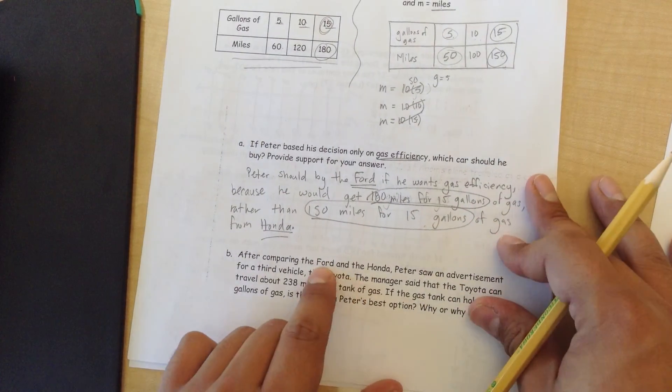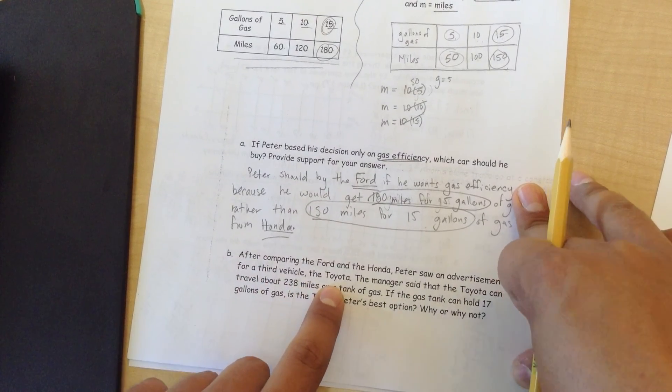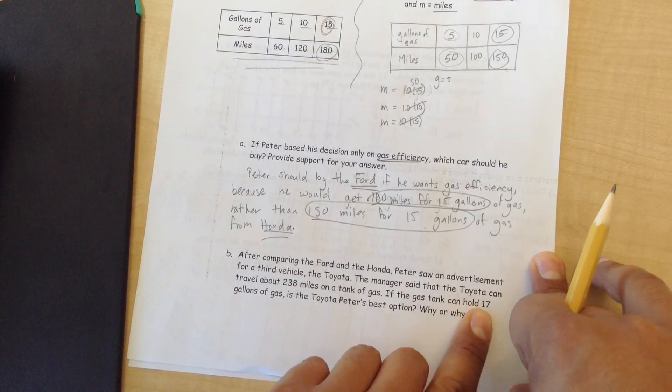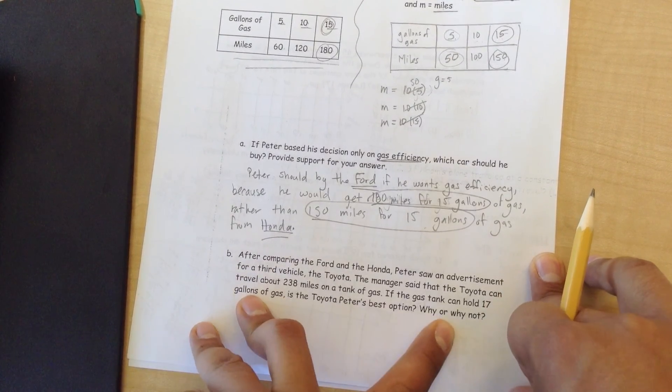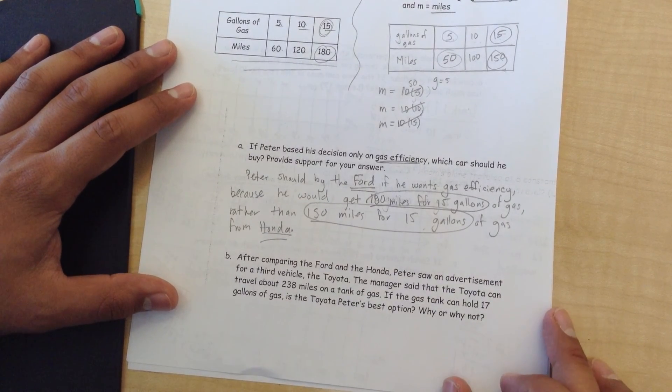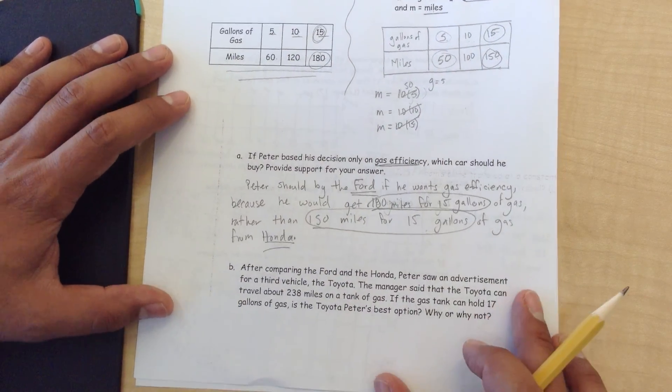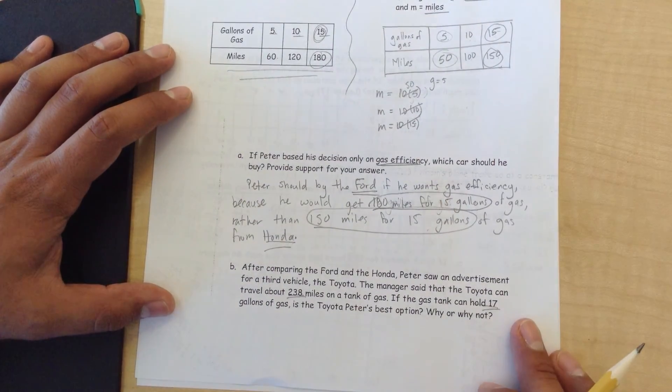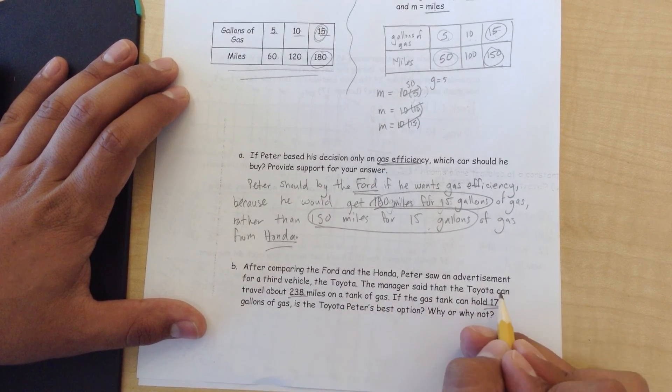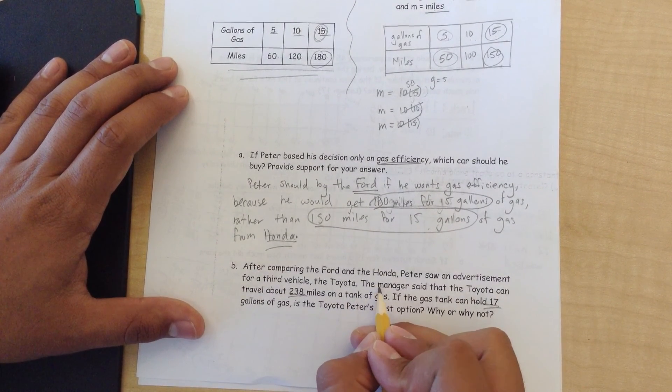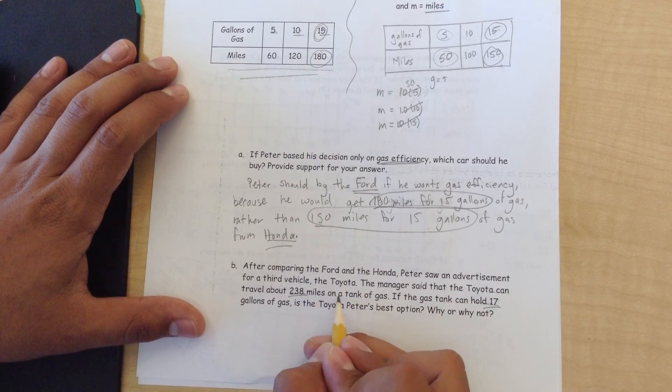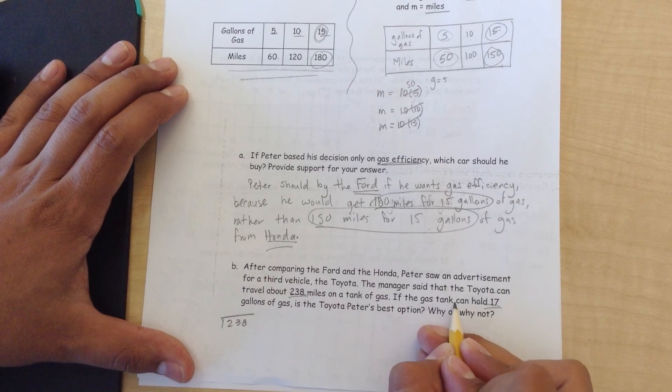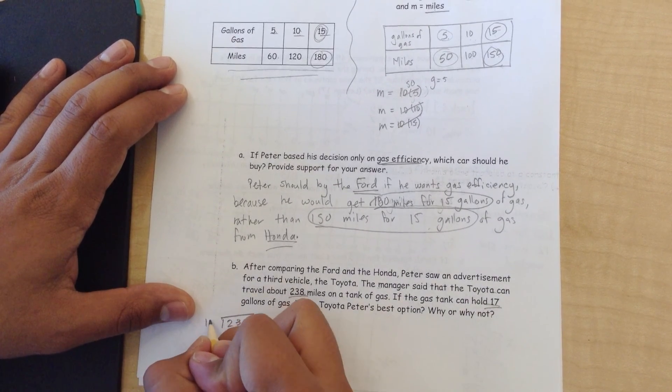After comparing the Ford and the Honda, Peter saw an advertisement for a third vehicle, the Toyota. The manager said that the Toyota can travel about 238 miles on a tank of gas. If the gas tank can hold 17 gallons of gas, is the Toyota Peter's best option? Why or why not? I'm not going to draw another table right here, but what I will find is how much per one gallon of gas this 238 miles goes, and then draw a table that's equivalent to these two. The total amount of gas that this can travel, it tells us in the second sentence. The manager said that the Toyota can travel about 238 miles on a tank of gas. So let's go ahead and write that down, 238. If the gas tank can hold 17 gallons of gas, so we know that it holds 17 gallons.